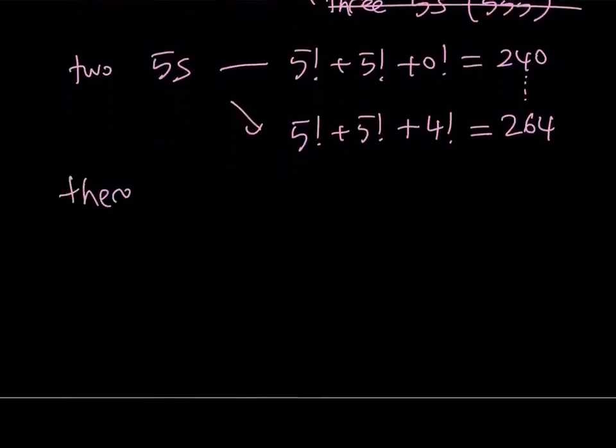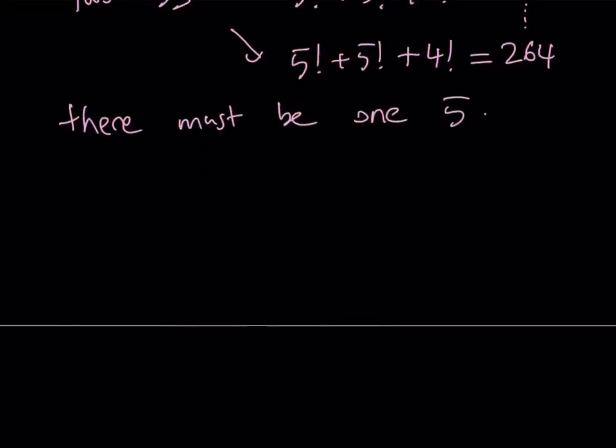So we have to have one 5. There must be one 5. In this case, what's going to happen? If we have one 5 only, then the smallest sum we can get is going to be 5 factorial plus 0 factorial plus 0 factorial. And that is going to be 121.